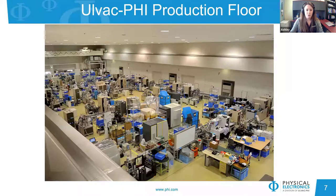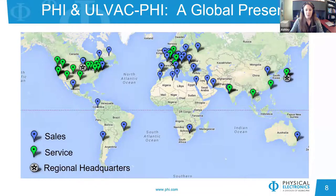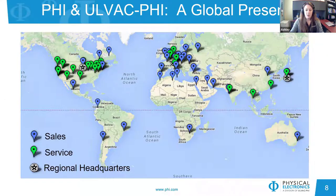Here's a picture of the production floor in Japan, showing about half of the production facility located there. You can see dozens of instruments in various stages of production. Aside from our regional headquarters in Minnesota and Japan, we also have sales and service headquartered in Munich, Germany at PHI GmbH. We have smaller service centers and service engineers strategically located near concentrations of installed instruments to provide global service and support.